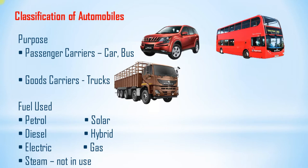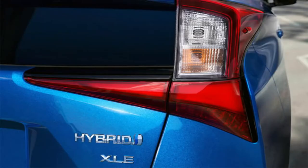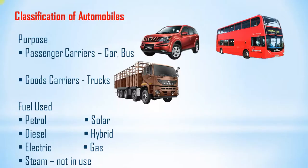According to the fuel used, we can classify automobiles as petrol vehicles, solar vehicles if operated by solar power, and diesel vehicles if operated by diesel fuel. Hybrid means a combination of power sources — generally electric and gasoline power are used together to propel the vehicle. Some cars like the Nissan Altima and Honda Civic have hybrid mentioned on the back side.